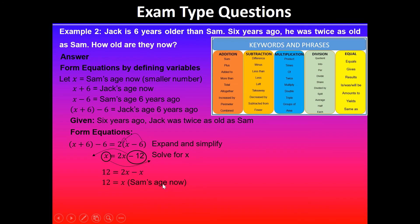So Sam's age now is twelve and we are told that Jack is six years older than him. So if I want to find Jack's age we will substitute 12 in Jack's equation x plus six, so 12 plus six will result into 18, and then we write the answer in context. So Jack is 18 years old and Sam is 12 years old now.